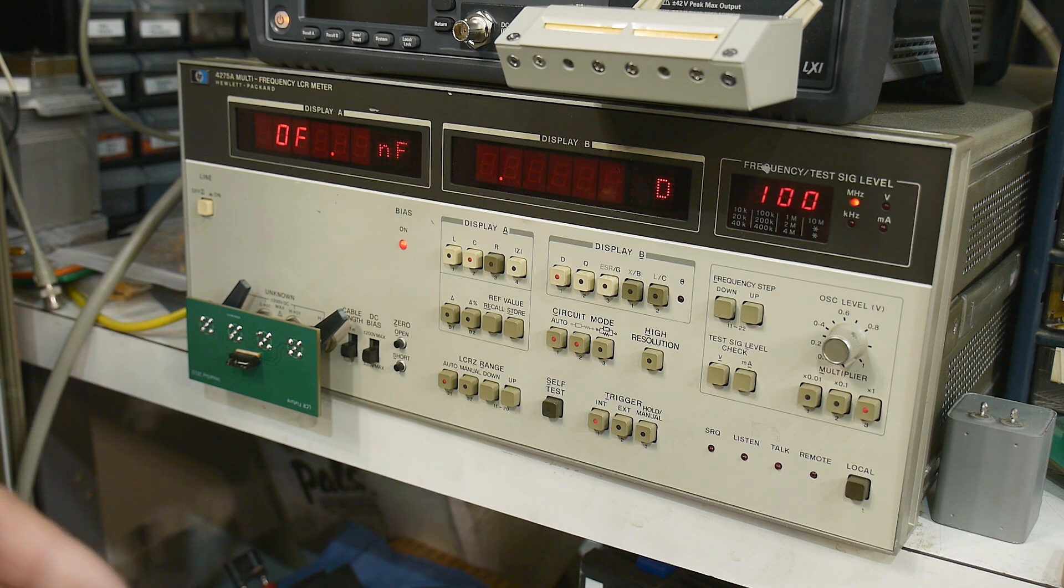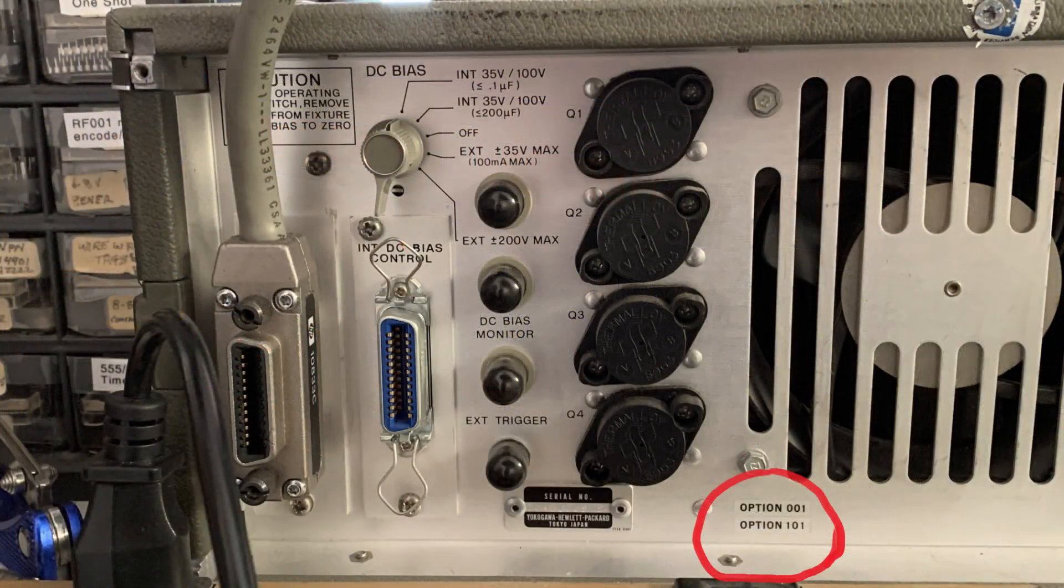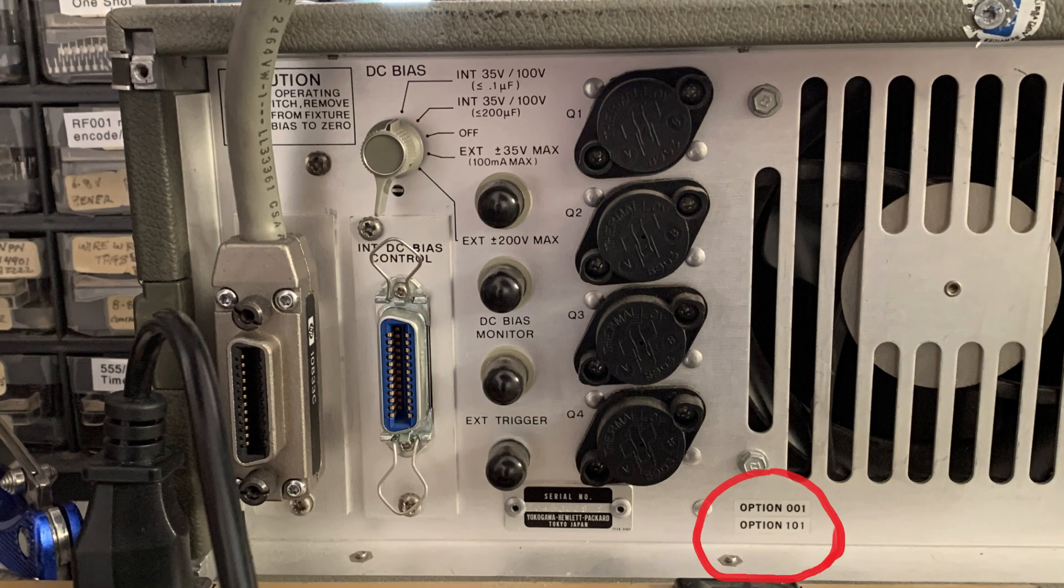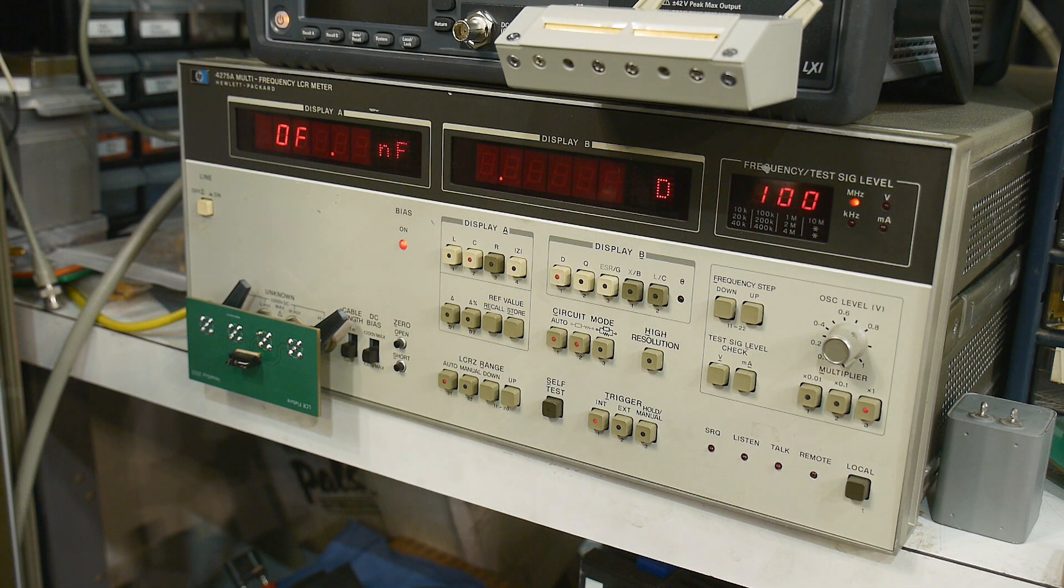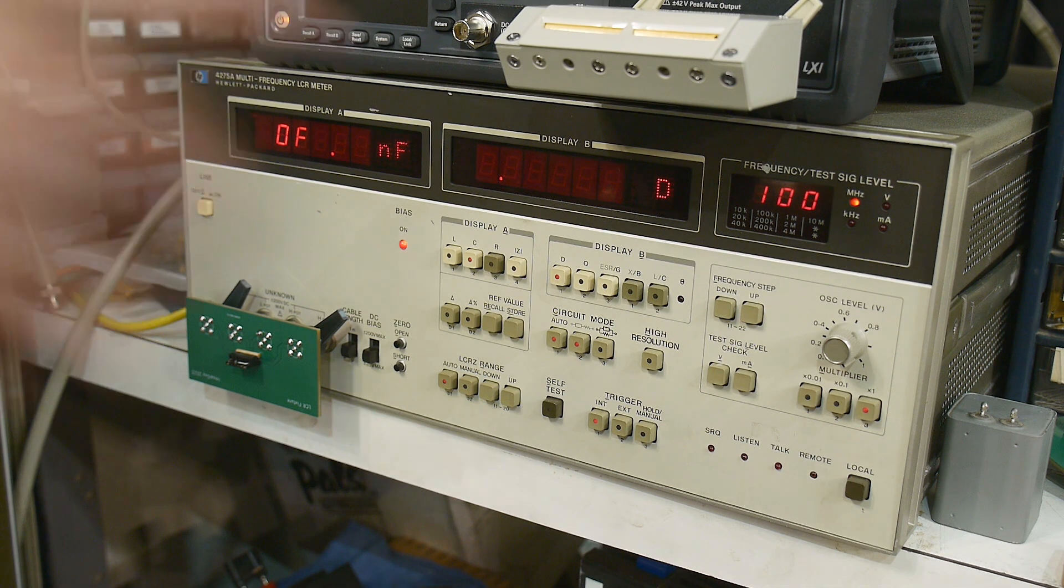So first of all, on the back of the instrument, read your option tag. If it says option one or option two, then those are internal bias controls. Option 101 or something like that is the HPIB control.